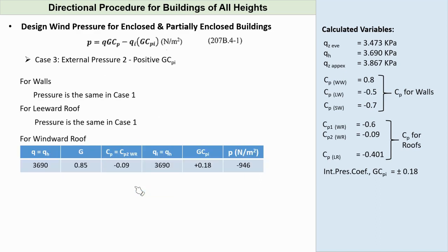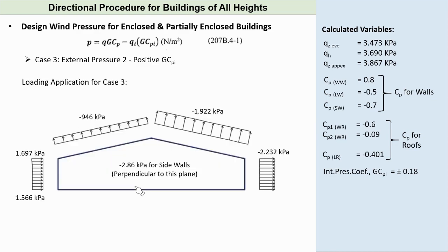Case 3, External Pressure 2 minus Positive GCPI. Wind pressures in walls and leeward roof are the same as in Case 1. But for the windward roof, we will use the second value of external pressure CP2, which is negative 0.09. By doing so, we get P for windward roof equals negative 946 pascals. Knowing all the surface pressures, we can draw the wind action for Case 3.